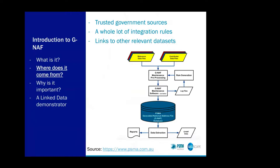To go through where the data comes from: PSMA receives addresses from a number of trusted government sources. It runs a vast number of integration rules built up over time — essentially to deduplicate the addresses, identify aliases or addresses known by other names, and then check them against reference data sets, which include the roads data set and the localities data set. It then links the addresses to other relevant data sets, which include the ABS mesh blocks for linkage to statistical data, and Australia's land parcels in a product called Cadillide.